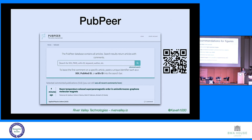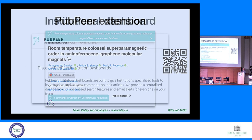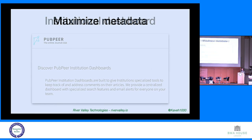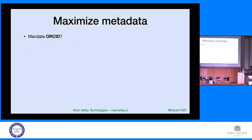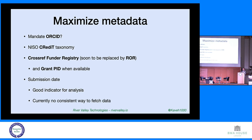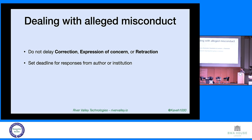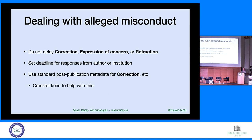Demand that original images are uploaded to supplementary data. You can also use PubPeer — a PubPeer extension will show, when you visit a file, whether there are any PubPeer comments, and there's an institutional dashboard as well. We need to maximize metadata: mandate ORCID, CRediT taxonomy, CrossRef funder registry (soon to be replaced by ROR), and grant IDs when available. The more metadata you have, the more chance of catching problems. Also ensure submission dates are captured in a structured way. Deal with corrections and expressions of concern quickly, set deadlines for author responses, and use standard post-publication metadata for corrections — something CrossRef is working on.